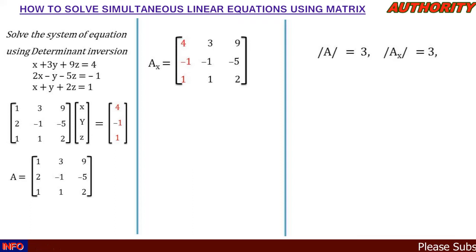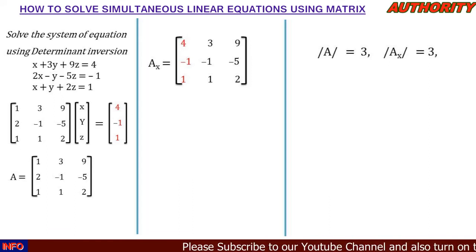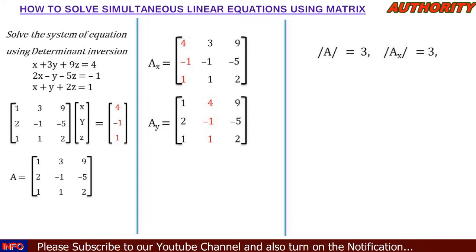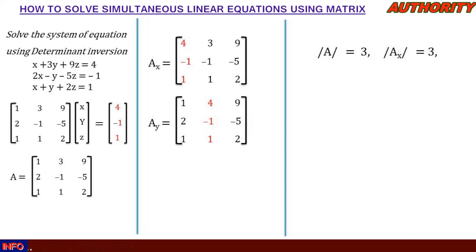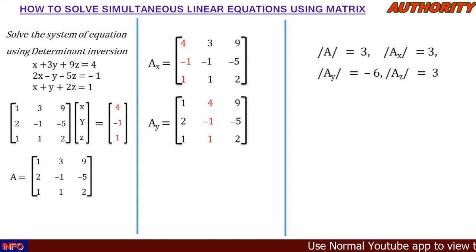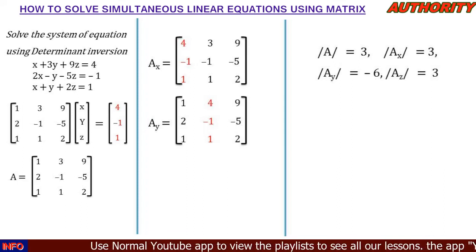Next, form matrix Ay by replacing the second column [3; -1; 1] with the constant [4; -1; 1]. So matrix Ay = [1, 4, 9; 2, -1, -5; 1, 1, 2]. The determinant of matrix Ay equals -6.